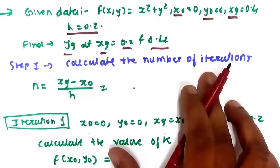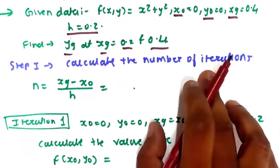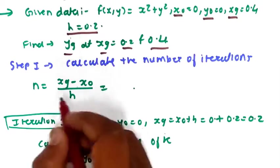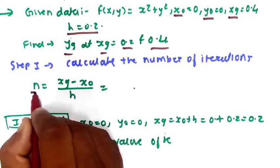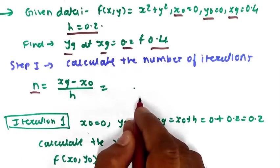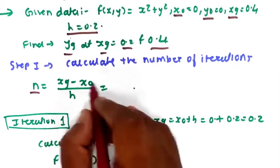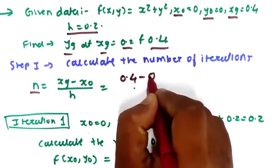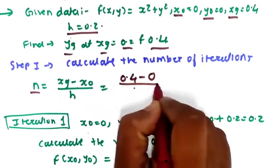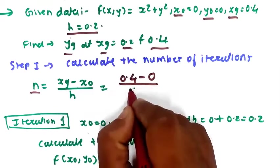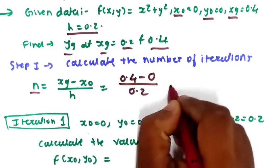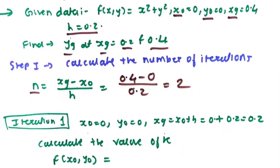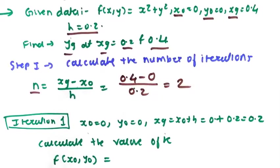Without wasting time, we have to calculate the number of iterations. For finding the number of iterations, we have the formula n equal to (xg minus x0) divided by h. So xg is 0.4 minus 0, divided by 0.2, giving us 2 iterations to perform.